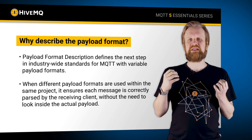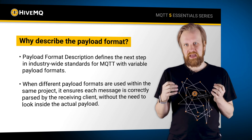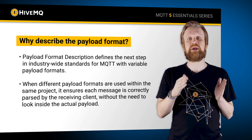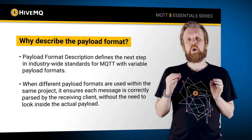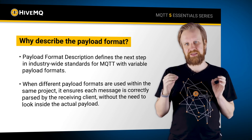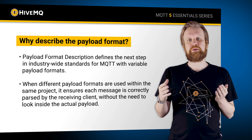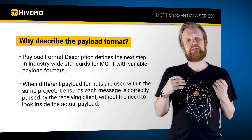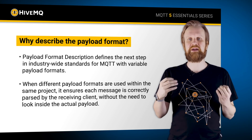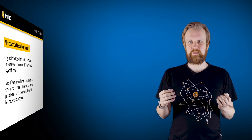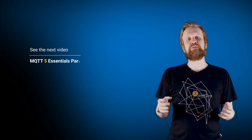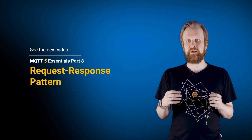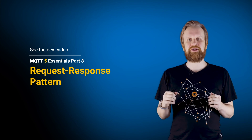A second good use case for payload format indicators is that you may be using multiple different types of payloads within the same project. The receiving client of a publish can know how to parse the payload it received only by looking into the payload format indicator, without having to actually open the payload itself. Think about multiple different JSON versions, where the JSON version could be represented in the content type. I hope to see you next week when we will be talking about the request-response pattern. Don't forget to subscribe to the channel.